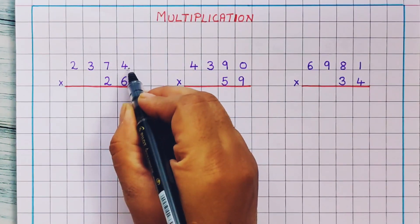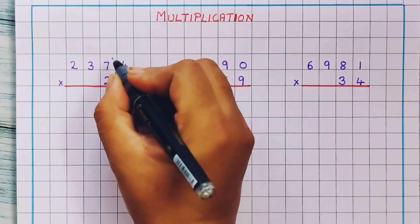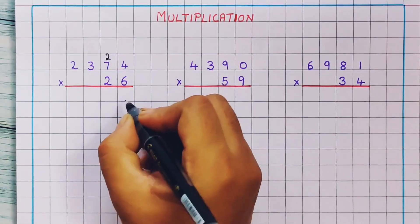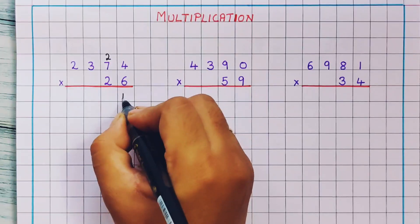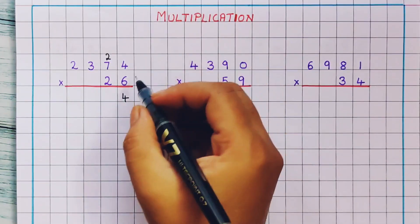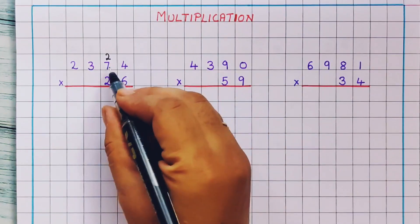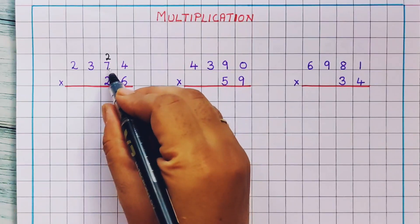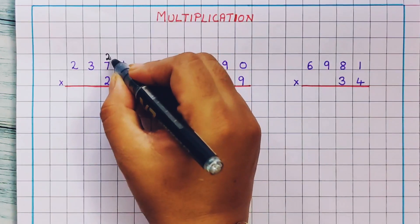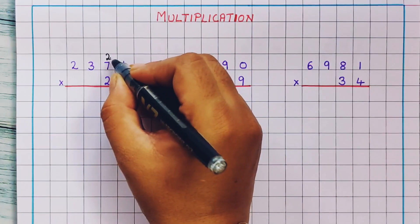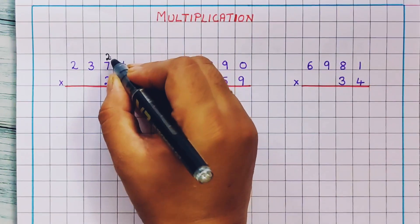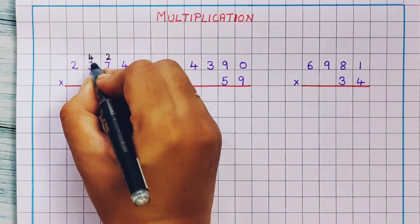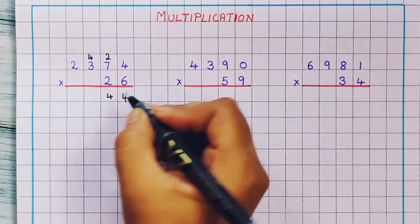6 4's are 24. So we will write here 2 and 4 — 24. Now 6 7's are 42. 6 7's are 42, plus here we are going to add this 2: 42, 43, 44. So here we are going to write 4 and 4 — 44.